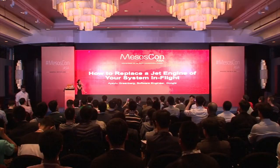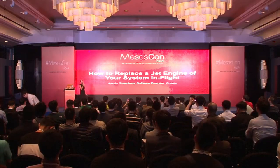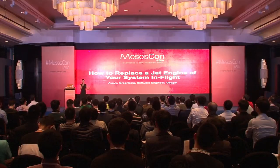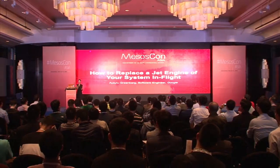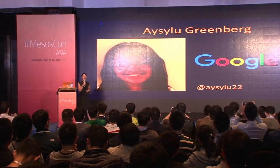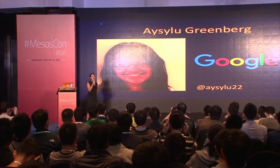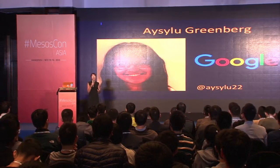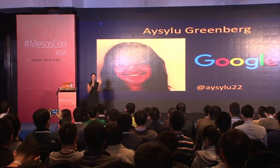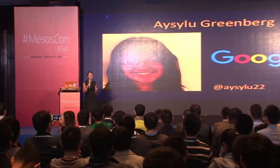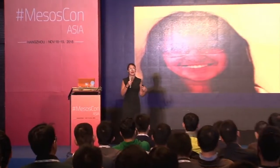Let's talk about how to replace a jet engine of your system in flight. Today, we'll talk about zero downtime migrations and how we can make that happen. I'm Isolo Greenberg. I work at Google on Google's infrastructure. My current project is Google Drive infrastructure. But today, we'll talk about the project I worked on as part of the development infrastructure — the distributed build system — and how we did zero downtime migration for that.